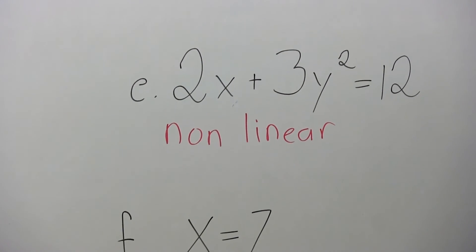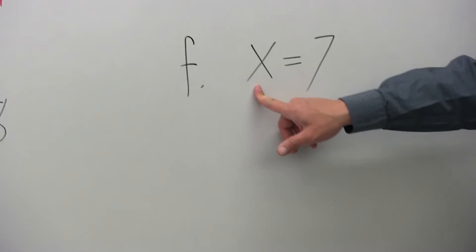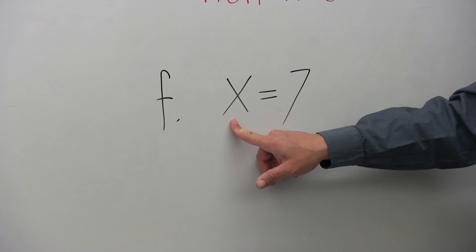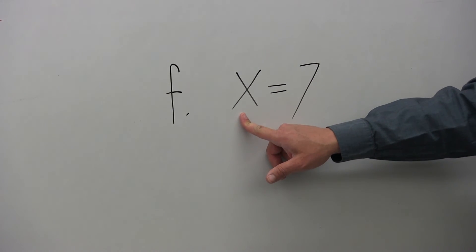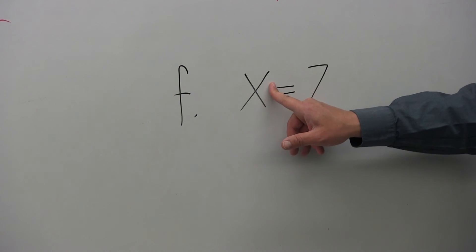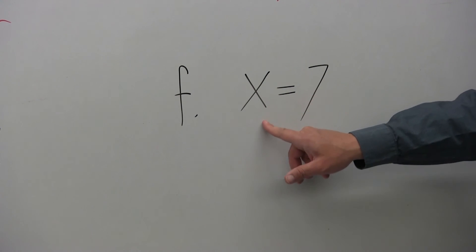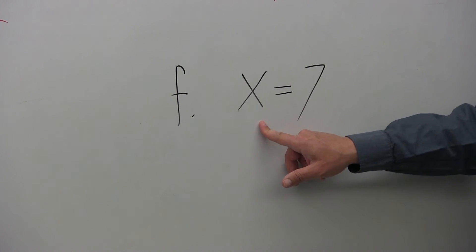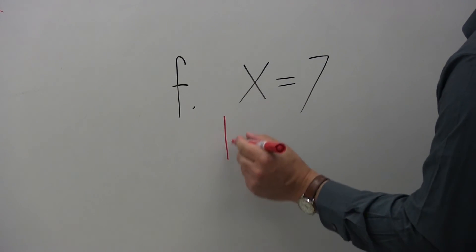Finally, the last one, part F. Is this equation linear or non-linear? x equals 7. It doesn't have a y in it, which is fine. The only variable is the x, and it is raised only to the first power. So the graph of this is a straight line. This is a linear equation.